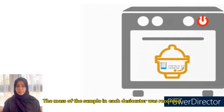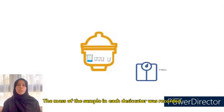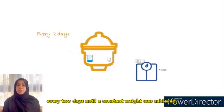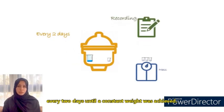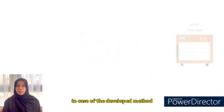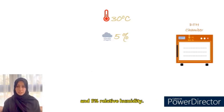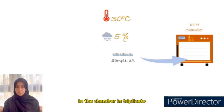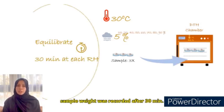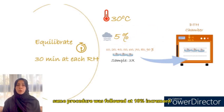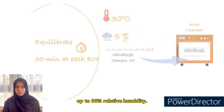The mass of the sample in each desiccator was recorded every two days until a constant weight was achieved. In the case of the developed method, the DTH chamber was set at 30 degrees Celsius and 5 percent relative humidity. Biomaterial samples were placed in the chamber in triplicates. Sample weight was recorded after 30 minutes, and the same procedure was followed at 10 percent increment up to 90 percent relative humidity.